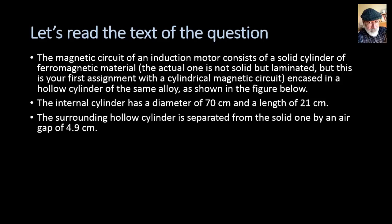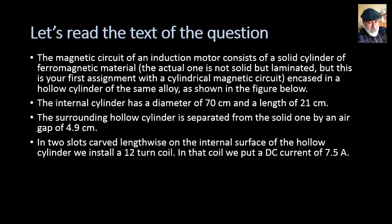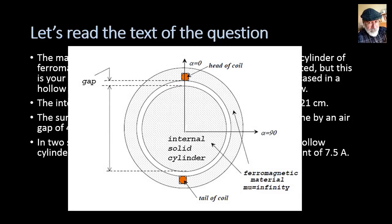The surrounding hollow cylinder is separated from the solid one by an air gap of 4.9 cm. In two slots carved lengthwise on the internal surface of the hollow cylinder, we install a coil with 12 turns and in that coil we put a DC current of 7.5 amperes.